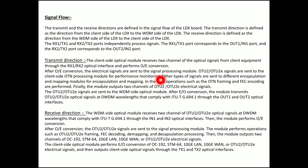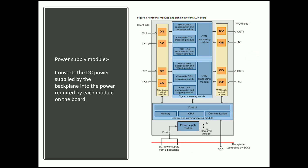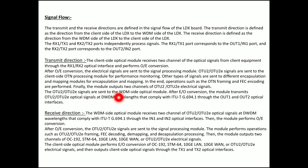The OTN processing module performs monitoring. Other types of signals are sent to the encapsulation and mapping module for encapsulation and mapping. Finally, operations such as OTN framing and FEC encoding are performed by the OTN processing module. The module outputs two channels — OTU1 and OTU2 signals — which are sent to the WDM side optical module. After electrical-to-optical conversion, the module transmits these two optical signals as DWDM wavelengths, with two specific DWDM lambdas assigned to output 1 and output 2.